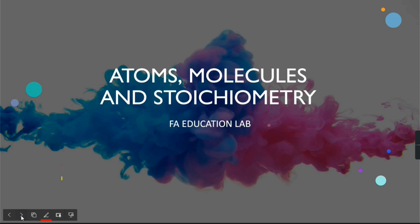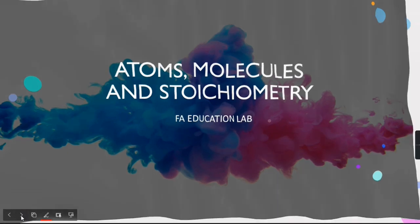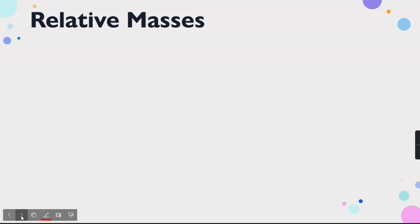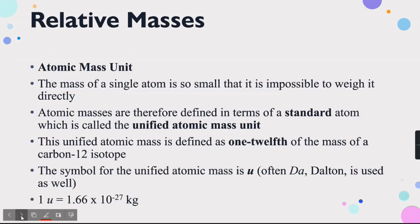Atoms, molecules, and stoichiometry. The first thing we're going to talk about is related masses, and this concept has been divided into a sub-topic: atomic mass unit. We're going very basic here first, and after studying these basic things we'll jump on to more difficult things, going according to the Cambridge syllabus 2022 to 2024.